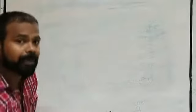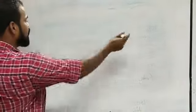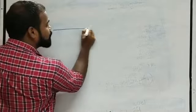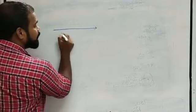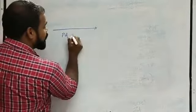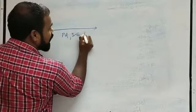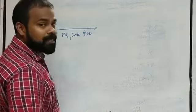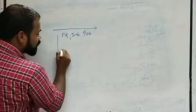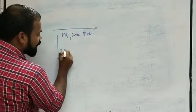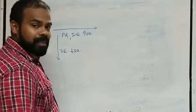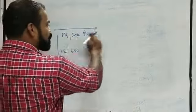We know that along the period — moving from left to right — ionization enthalpy increases. As we come down the group, ionization enthalpy decreases.